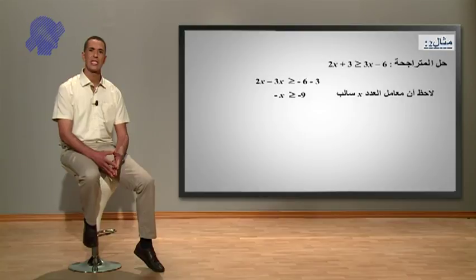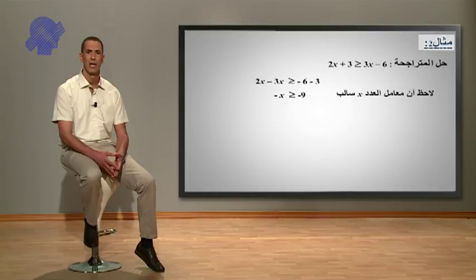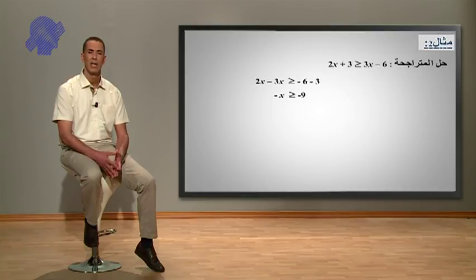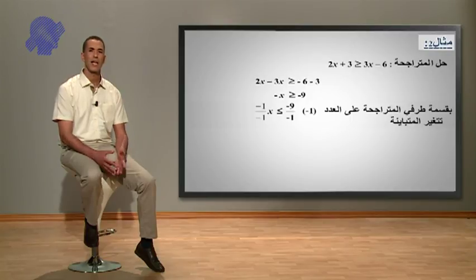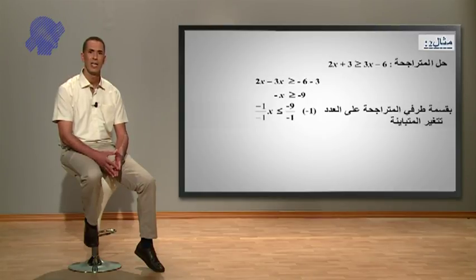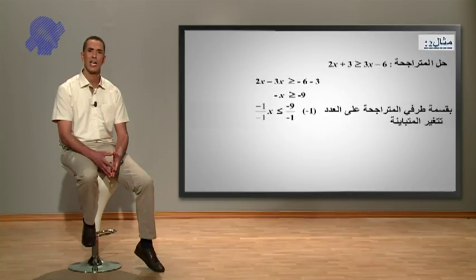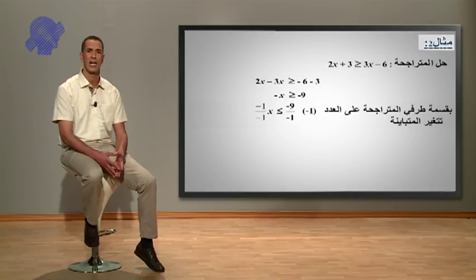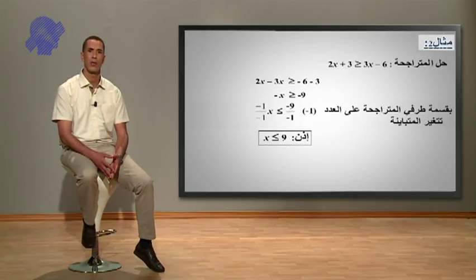مثال ثاني: حل المتراجحة 2X زائد 3 أكبر أو يساوي من 3X ناقص 6. إذن 2X ناقص 3X أكبر أو يساوي من ناقص 6 ناقص 3، بعد تبسيط نجد ناقص X أكبر أو يساوي من ناقص 9. لاحظة: معامل المجهول X هو عدد سالب. بقسمة طرفي المتراجحة على العدد ناقص 1 تتغير المتباينة لتصبح X أصغر أو يساوي من 9.